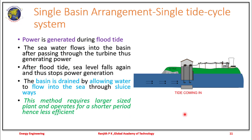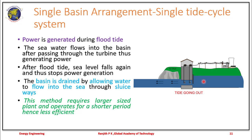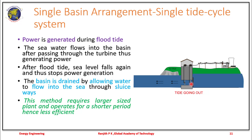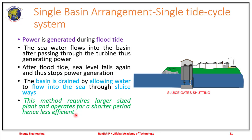In a single tide cycle system, power is generated only during the flood tide. The basin drains the water by allowing it to flow into the sea through the sluice gate, and only when the tide moves does the turbine rotate; otherwise the plant does not operate. This method requires a large plant size, operates for a very short time, and is considered very less efficient.